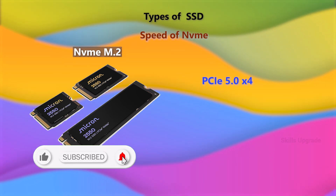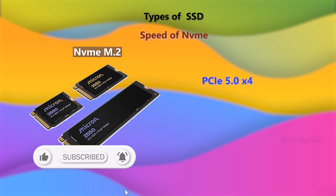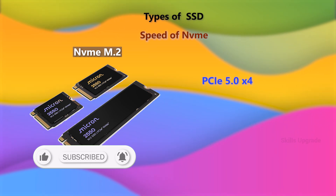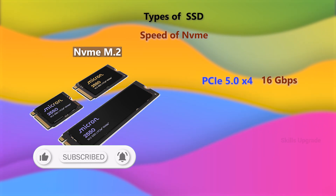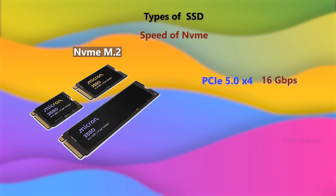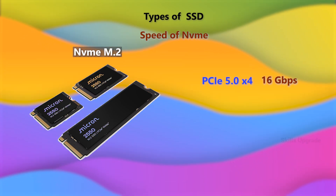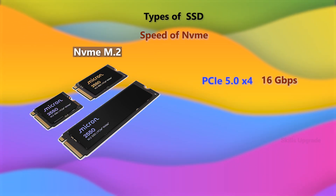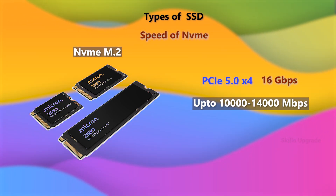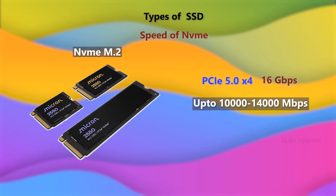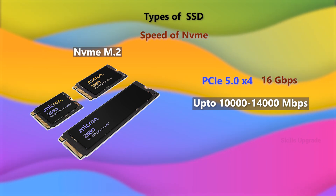PCI Express 5.0 x4 version is 16000 Mbps. The write speed is 16000 Mbps, with some models offering 10,000 Mbps write and 14000 Mbps read speed.